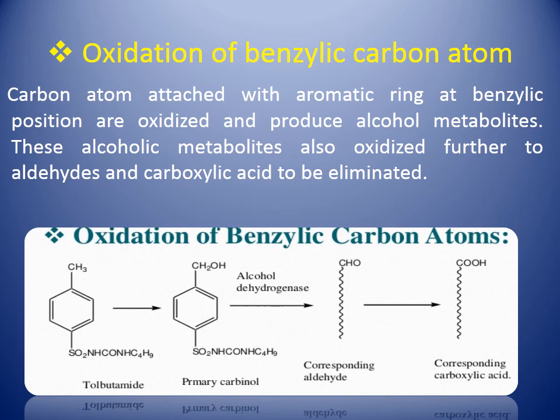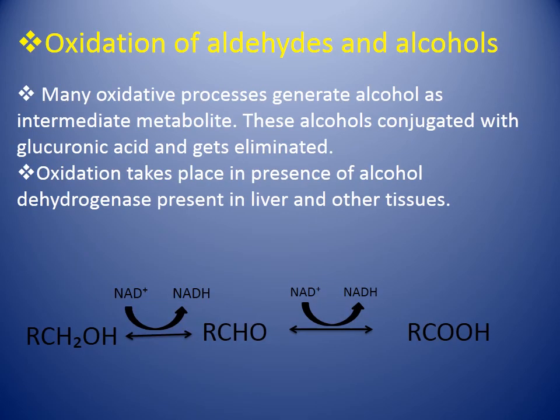Now, the oxidation of benzylic carbon atom. Carbon atoms attached to the aromatic ring at the benzylic position are oxidized and produce alcohol metabolites. These alcohol metabolites can bind with glucuronic acid to produce glucuronides. These alcoholic metabolites also oxidize further to aldehydes and carboxylic acids to be eliminated. For example, tolbutamide has a benzylic carbon which is changed to a primary carbinol, and in the presence of alcohol dehydrogenase can change to the corresponding aldehyde and carboxylic acid.